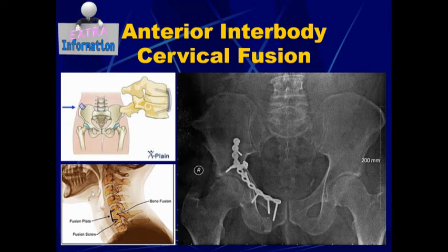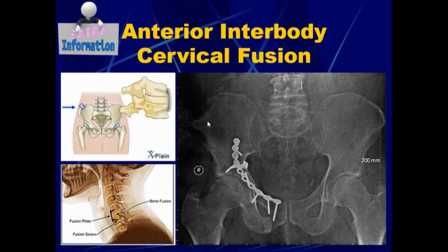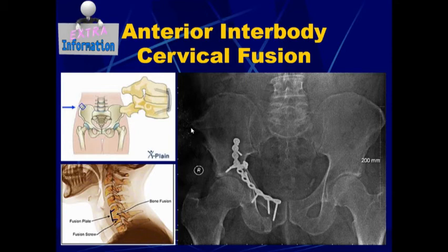Also, when we talked about that anterior interbody cervical fusion earlier, a piece was taken from the coccyx bone or the hip bone to then fuse into the cervical vertebrae. On this x-ray, you can actually see right up here — that is the piece that is missing, taken a year earlier for his cervical fusion. So we are able to see that in this x-ray as well.